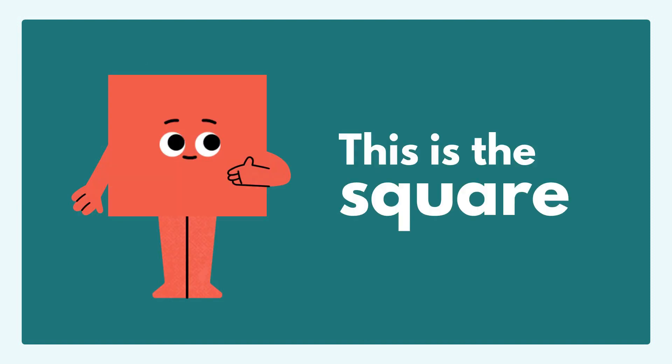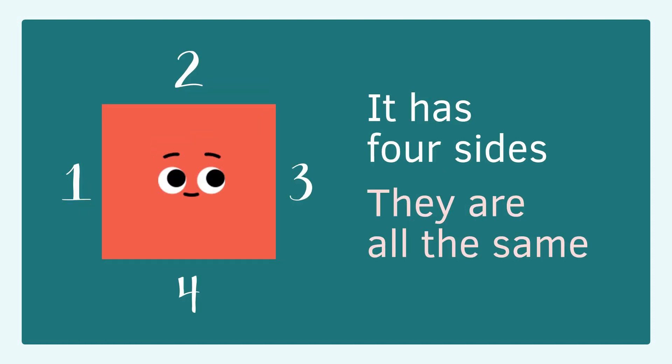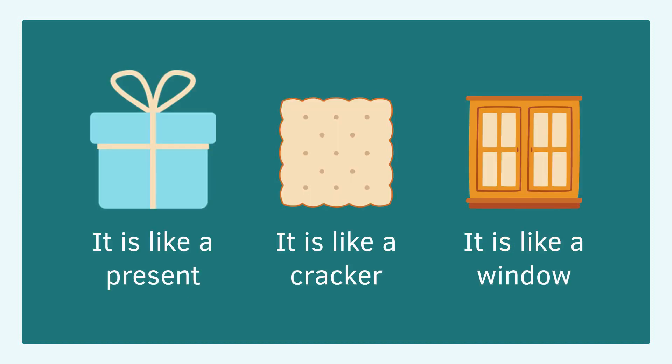This is the square. It has four sides. They are all the same. For example: present, cracker, and window.